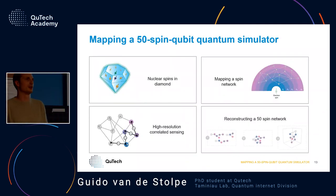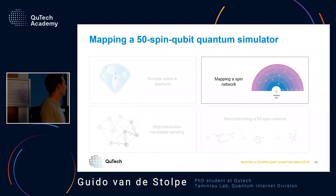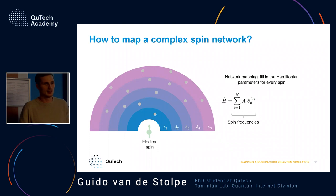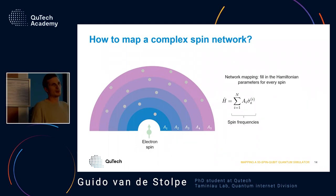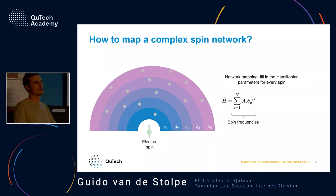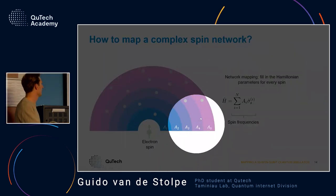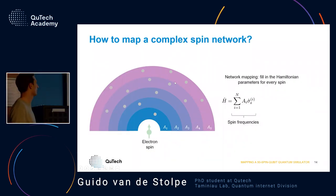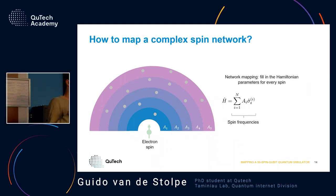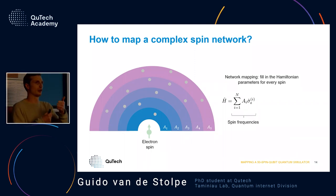So how do we do it? To map a spin network I mean I want to fill in the Hamiltonian parameters that describe this network — for every spin, what is the spin frequency and how does it couple to other spins. In a schematic of the system, you have the electron spin in the middle and nuclear spins around it. These nuclear spins have a hyperfine interaction with the electron spin, giving them a frequency shift: if a nuclear spin is very close to the electron it gets a big frequency shift, and if it's farther away it changes less.